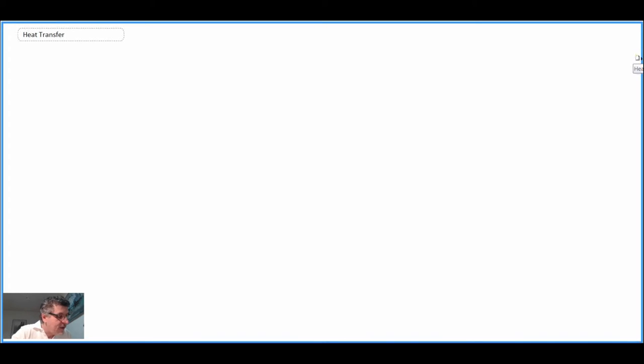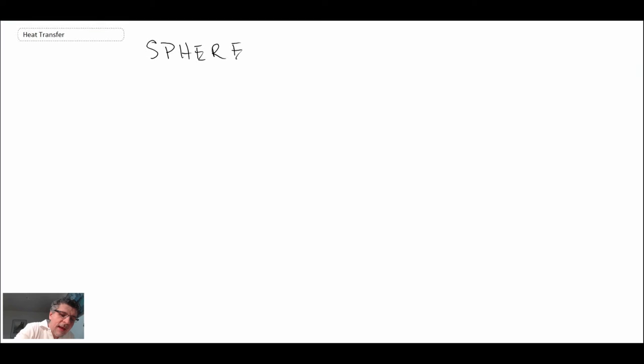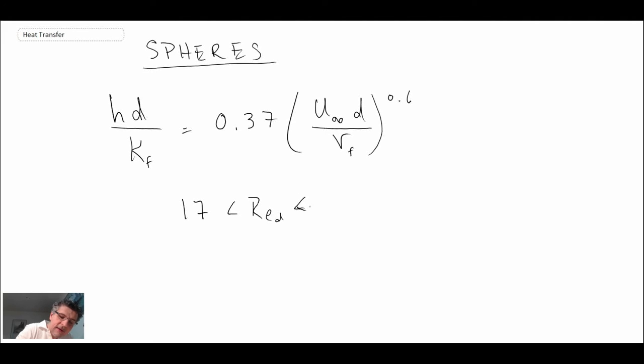That is non-circular cylinders. The last shape that we're going to cover in this lecture are spheres. And again, there are different correlations that exist for spheres. I'm going to give you one. And this one applies for Reynolds number based on diameter that goes from 17 up to 70,000.